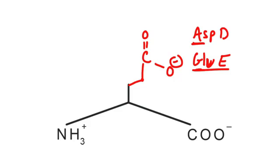The pKa for aspartate and glutamate is around 4 — specifically 4.1. I don't have any tricks for remembering that one, but if anyone has a helpful mnemonic, send it in and we'll redo the video — we'd love ideas from outside our group. Remember, if you draw these out a few times and go through the video once or twice, this should really help. It's helped everyone we've shown it to in class. Let us know if there's any way we can improve it.